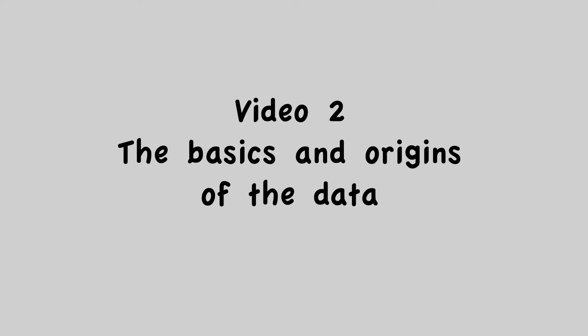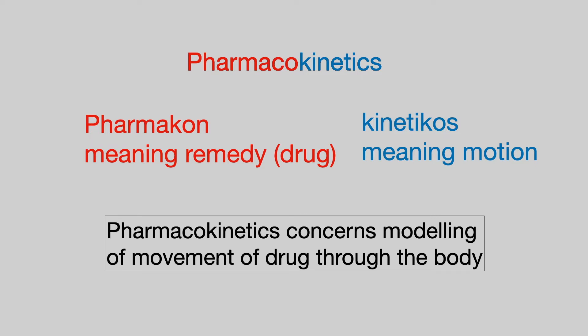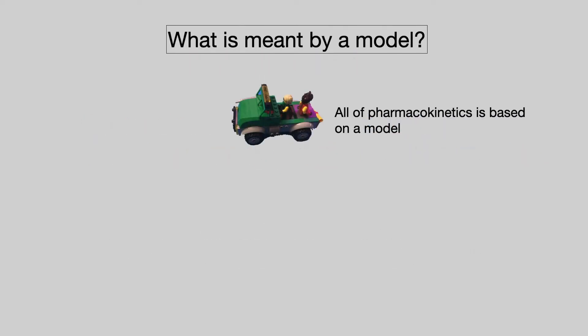Video 2, The Basics and Origins of the Data. The word pharmacokinetics comes from the Greek pharmakon, meaning remedy or drug, and kineticus, meaning motion. Pharmacokinetics concerns modelling of movement of drug through the body. It's worth remembering that all pharmacokinetics is based on some form of model.